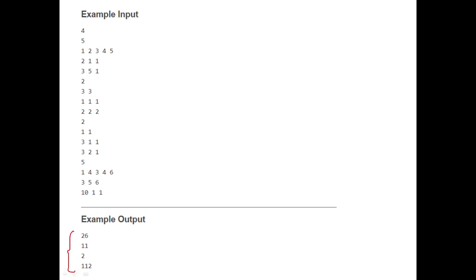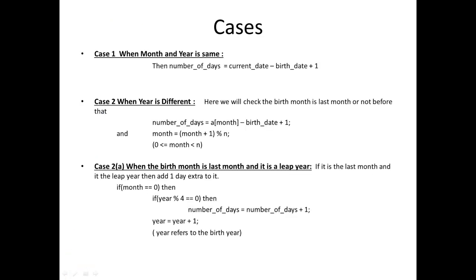I'll explain this problem based on three cases. The first case is when the month and year are both the same — that means the birth month and current month are the same, along with the birth year and current year. In that case, the number of days will simply be current date minus birth date plus one.